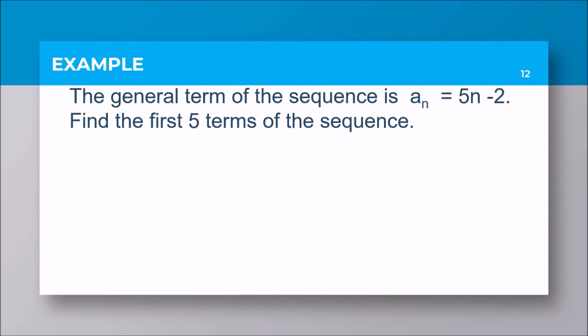Another example. The general term of a sequence is a sub n equals 5n minus 2. Find the first five terms of the sequence. Again, for the first term, substitute n equals 1. Copy the equation, then plug in n equals 1. Simplify: 5 times 1 is 5, bring it down minus 2, so 5 minus 2 equals 3.